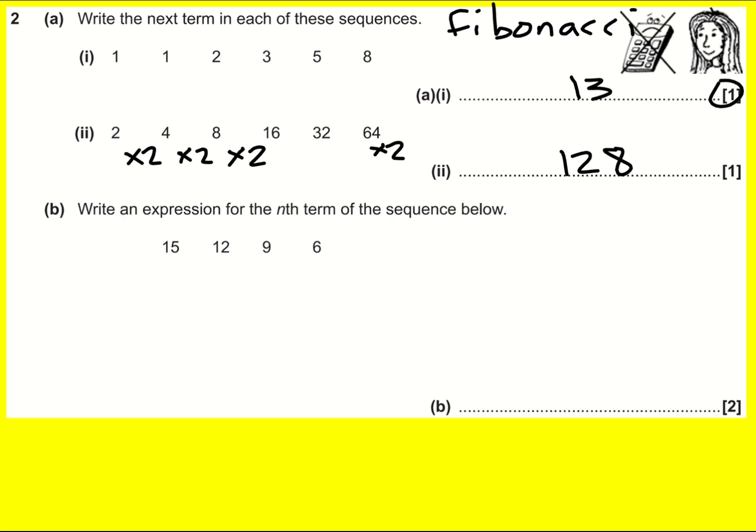Finally, write an expression for the nth term of the sequence below. This one is going down by a constant amount. These are special sequences. This is called an arithmetic sequence.